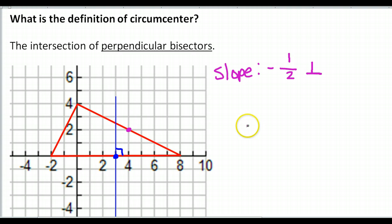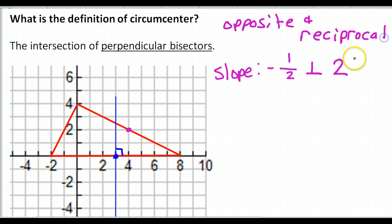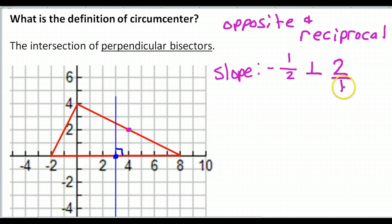Like we practiced earlier, what will be the slope of a perpendicular line? The slope of a perpendicular line is going to be positive 2. It has to be opposite and reciprocal. If this one is negative, the other one has to be positive. If this is 1 over 2, this one's got to be 2 over 1, which is 2. As I draw my perpendicular bisector, I need to make sure that the slope is 2 — up 2 over 1.